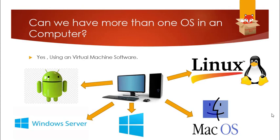Now we come to the question: can we have more than one operating system in a computer? For example, this particular computer can run multiple operating systems — your Android OS. Android OS is a Linux-based distribution. Android is a distribution of Linux. So you can run Windows Server, Windows, Mac OS, and Linux OS — you can run different operating systems in a single PC.